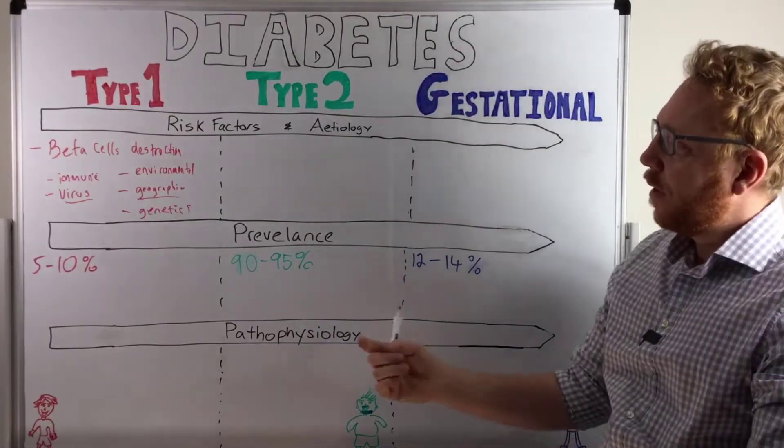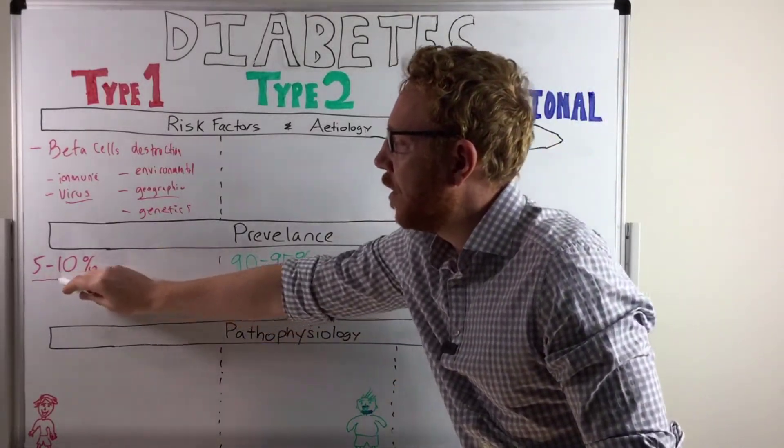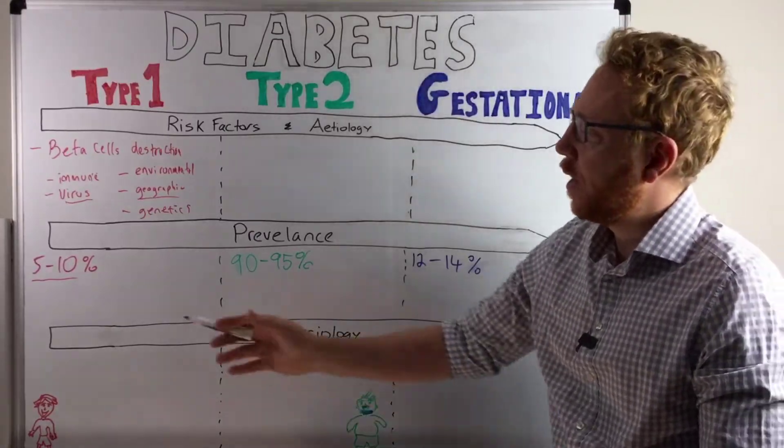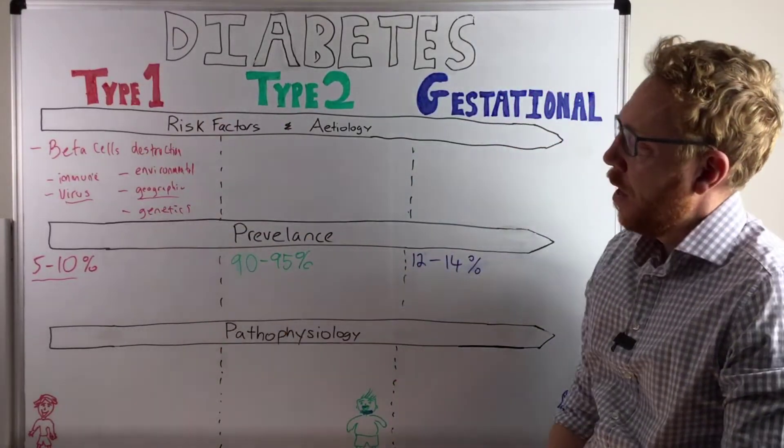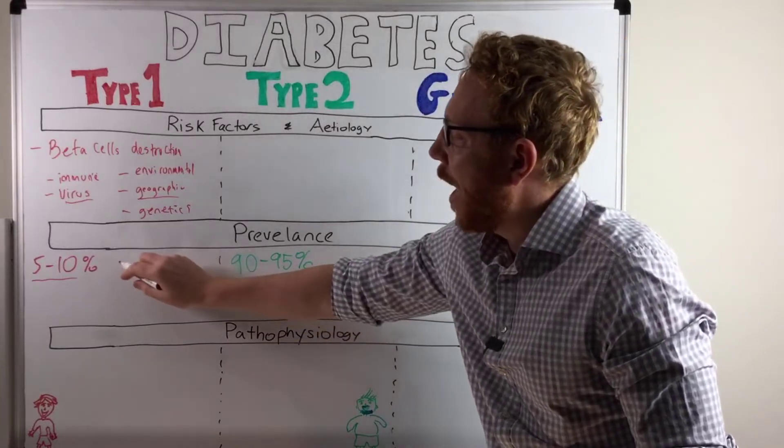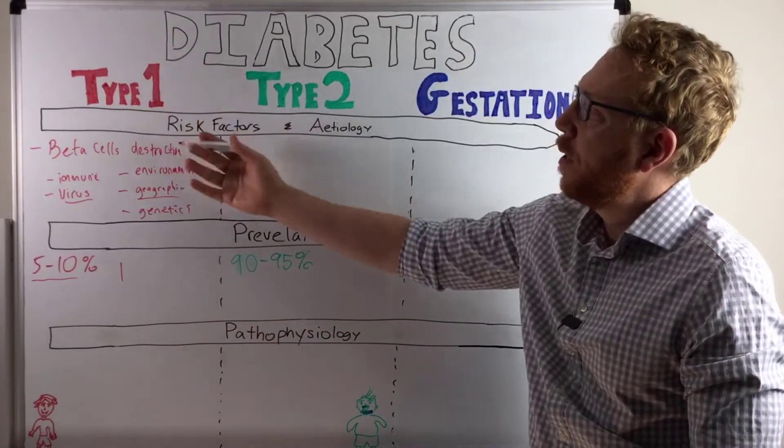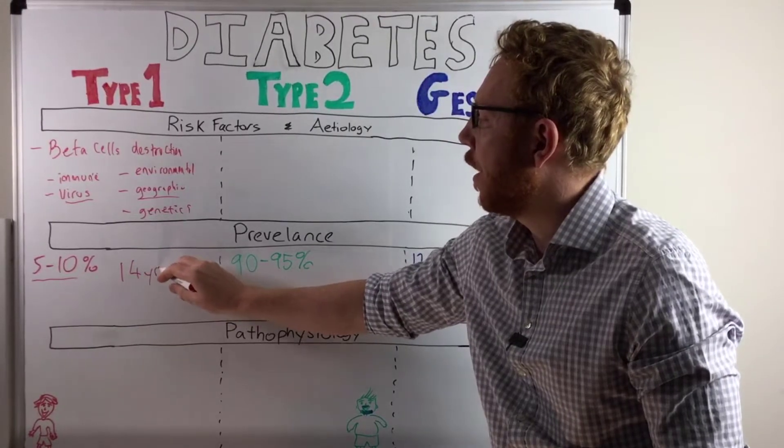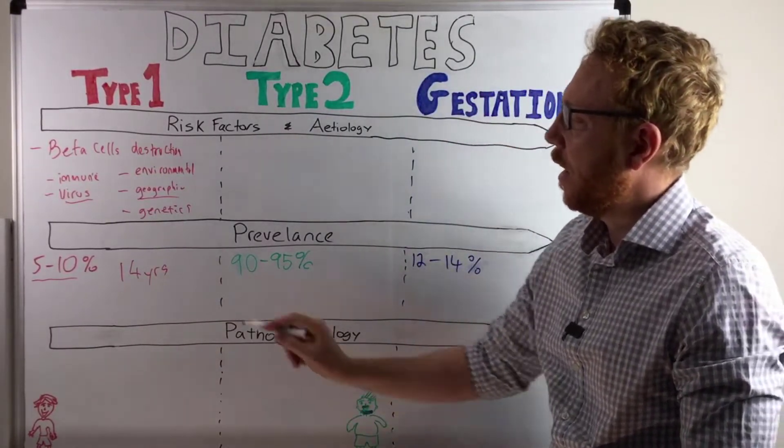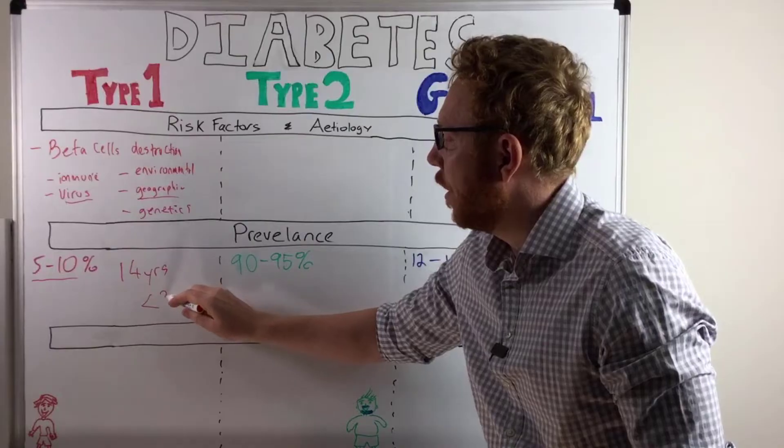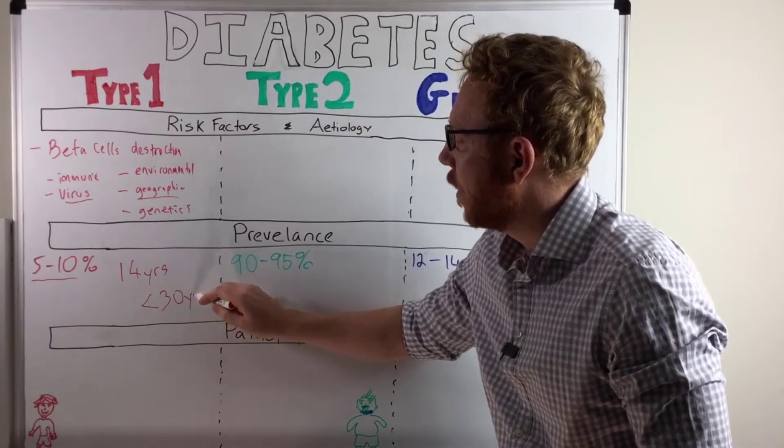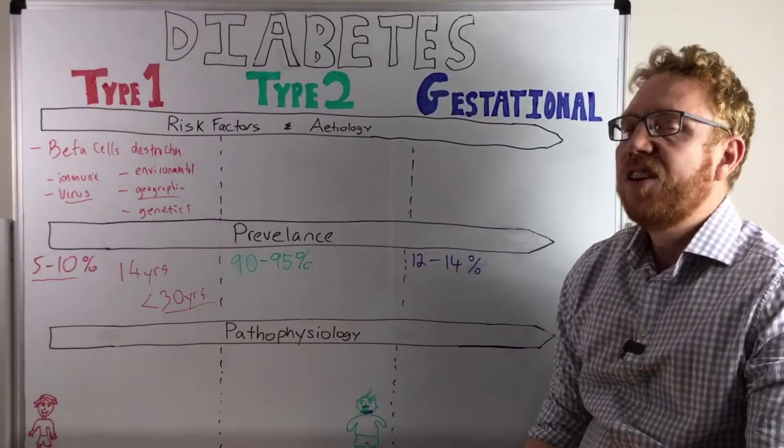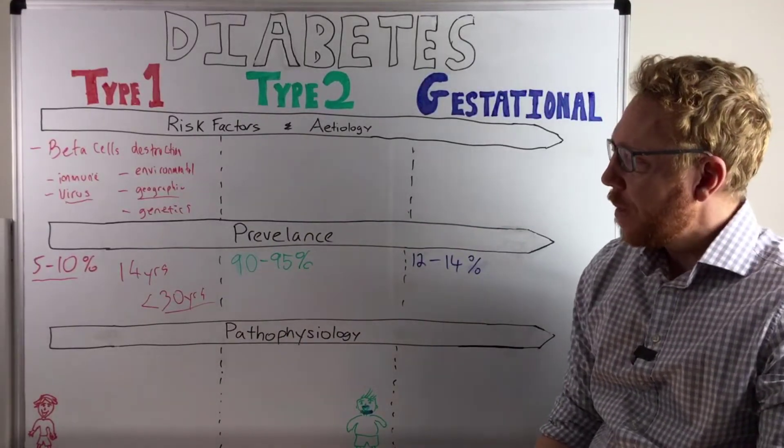Now in terms of the prevalence, approximately 5 to 10% of all diabetes mellitus seems to fit into this category. The average age of a person that would be diagnosed with type 1 diabetes would be 14 years. But essentially, it's anything under 30 years is generally considered the most likely type of individual in this category.